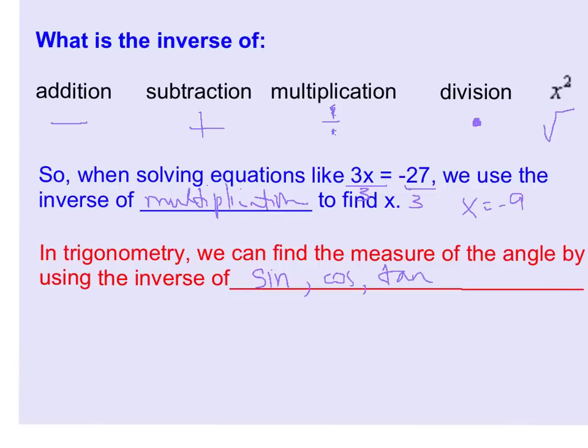If you take a quick look at your calculator, if you look above the sine, cosine, and tangent buttons, you're going to see sine with a little negative 1, cosine with a little negative 1.